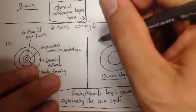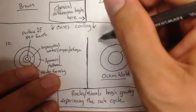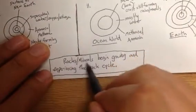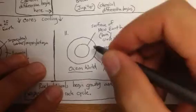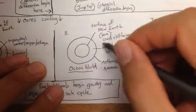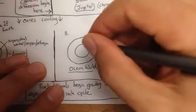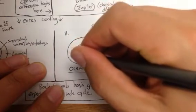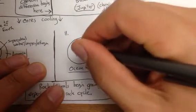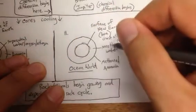Then you have the really interesting part when things get really complex. You have rocks and minerals begin growing and experiencing the rock cycle. This is when the rocks begin forming, so you have the surface of new earth and all the crystals begin growing around the surface, inside the crust, and inside of caves as the caves form.